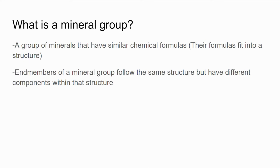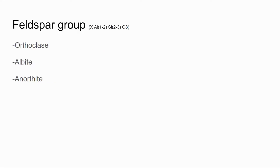Now we need to talk about what a mineral group is. A mineral group is a group of minerals that have similar chemical formulas, so their formulas fit a kind of general structure. The end members of a mineral group are members that have a specific ion. For example, the sodium end member of the feldspar group is albite, because it has sodium as its differentiating ion from other members of the feldspar group.